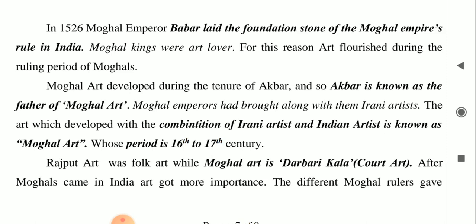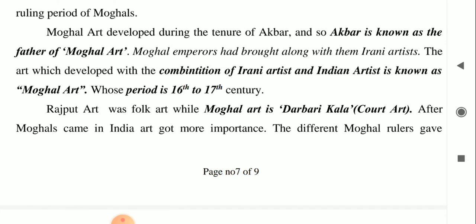Mughal art developed during the tenure of Akbar, and therefore Akbar is known as the father of Mughal art. The Mughal emperors had brought along with them Irani artists. When they came to India, they brought their culture, their artists, and many things with them. The art developed through a combination of Irani artists and Indian artists came to be known as Mughal art. Since Akbar believed in secularism and Sarva Dharma Sama Bhavna, he gave Indian artists the chance to work in his court as well.